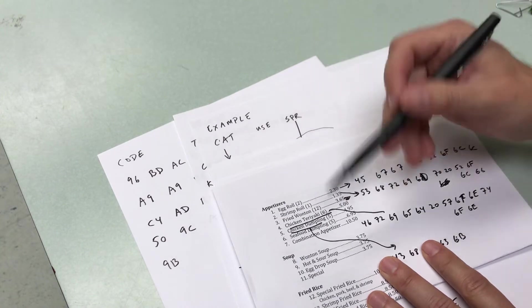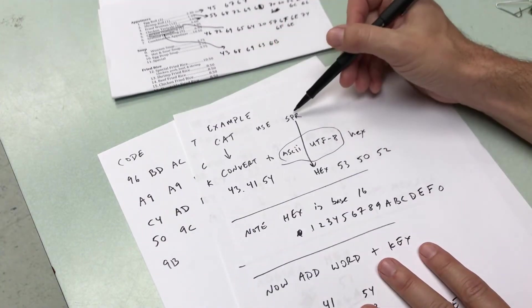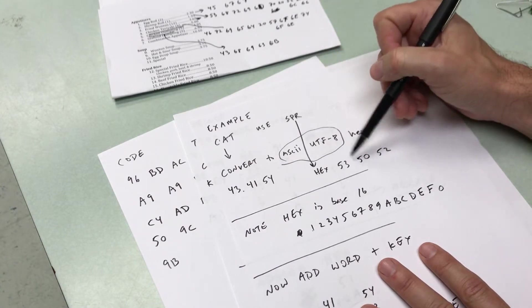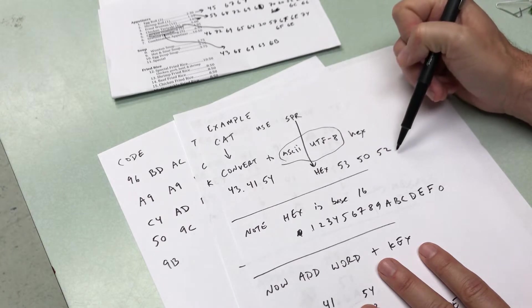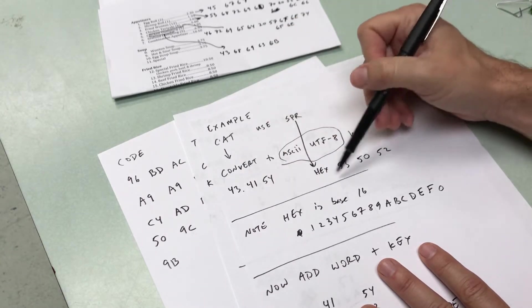So I had, let's say I have spring roll. So I have SPR for spring roll. And I'm going to convert that to hex too. So S is 43, P is 50, and R is 52. So now I have my text and my code. And this is my key.